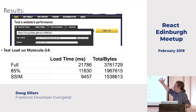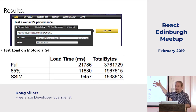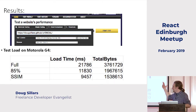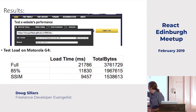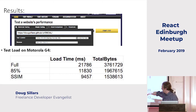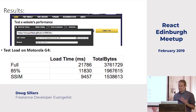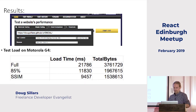I put them into WebPageTest using a 3G connection on a Motorola G4 in Virginia. The load time from the full-size image to 85% drops by about 10 seconds, and I save another 2 seconds going to structural similarity. However, it's still 1.5 megabytes — still really big. We can go smaller.